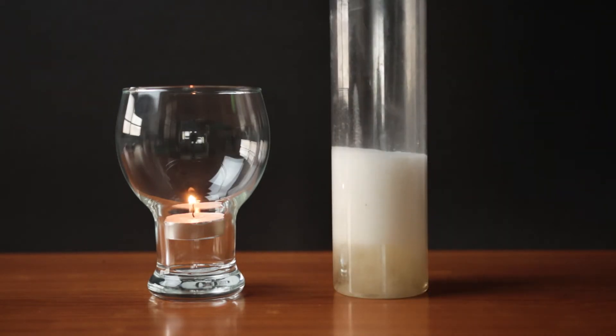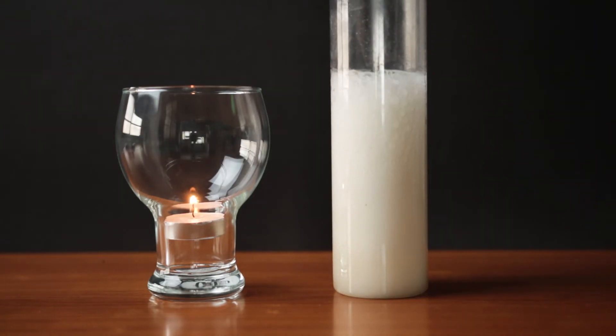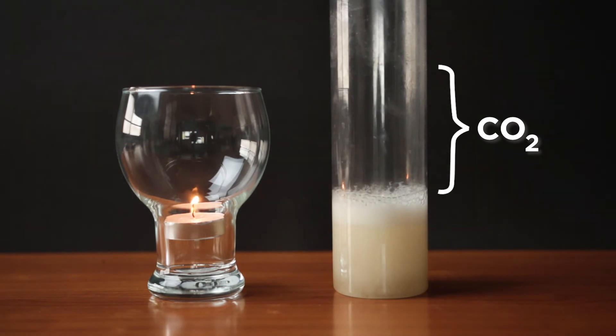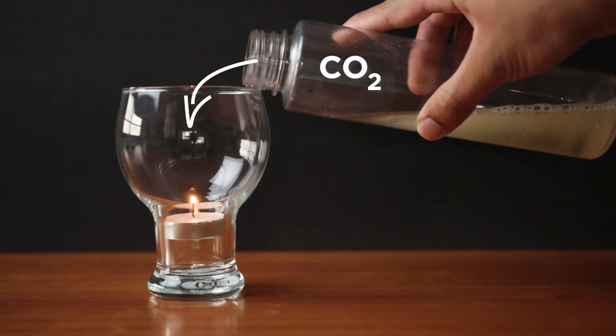The chemical reaction between the baking soda and vinegar produces carbon dioxide. Carbon dioxide is denser than normal air, so it sits closer to the bottom of the container. When you tilt the container, the carbon dioxide sinks to the bottom of the glass.